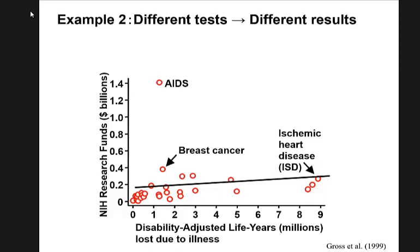The next example is data from before 1999 from NIH. For each disease, they counted how many research funds were used over a year. The biomarker and the research fund is on the y-axis, and the x-axis is the number of life years lost due to each illness. If you show statistical significance based on this, you could prove NIH spent money effectively to save patient lives.